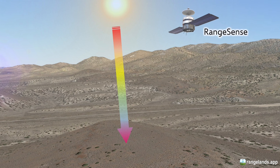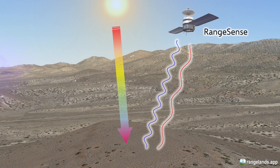The energy from the sun moves through the atmosphere and comes into contact with the earth's surface. At that point it is either absorbed or reflected, and that energy is ultimately either reflected or emitted by the earth's surface, providing tremendous information about vegetation and a variety of other processes.